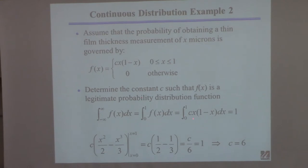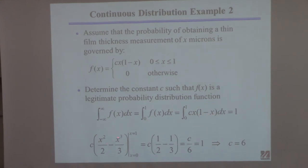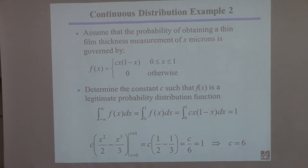I need this integral to be equal to 1. So in this case I've explicitly done the integration. If you integrate something like x you get x squared over 2, and if you integrate minus x squared you get minus x cubed over 3. You evaluate the two limits of 1 and 0, and that ends up being c over 6. So c should be 6 — if you use c equals 6, you integrate this and you get an area of 1.